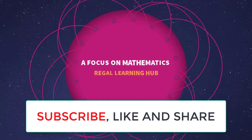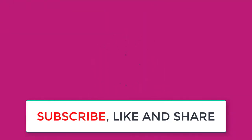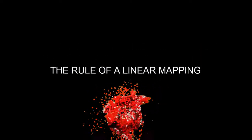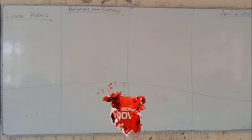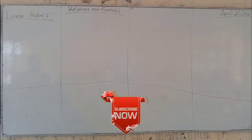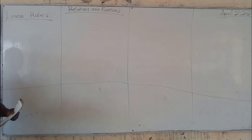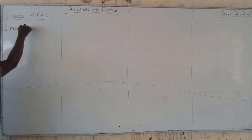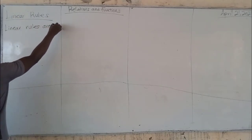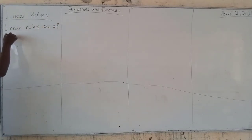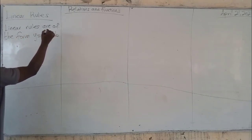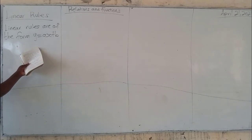Kindly subscribe to the channel for more updates. Now, linear rules — alright, of the form Y is equal to AX plus B. Are you okay?